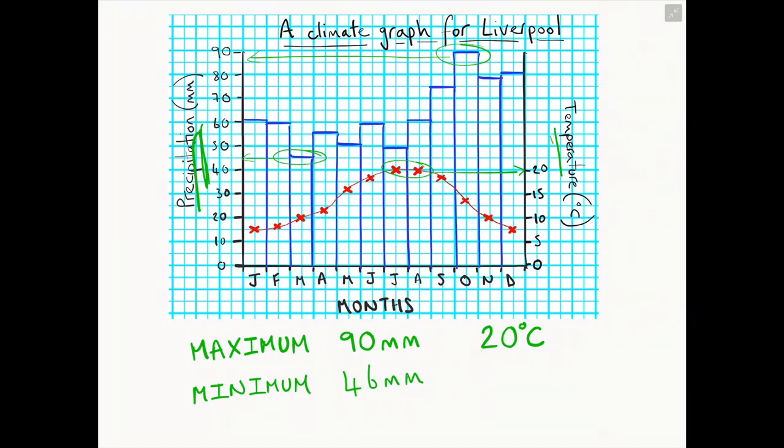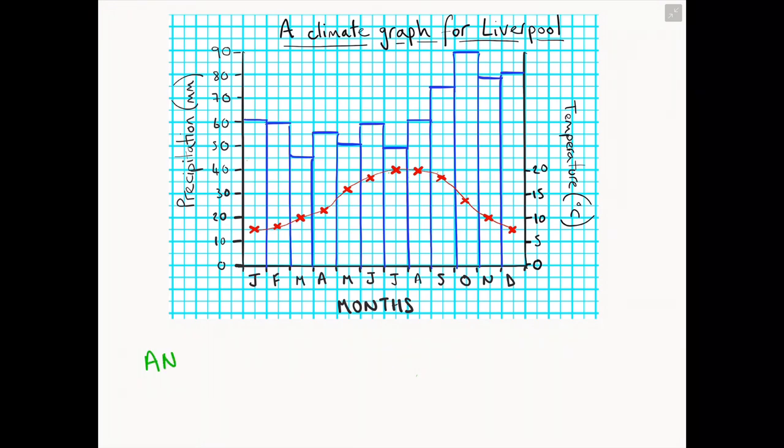Again, if we do the same with temperature, referring to our right-hand axis this time, we are looking for our lowest score on our line, which is 7 degrees Celsius.